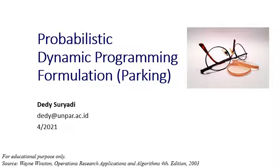Now let us see the very last example for probabilistic dynamic programming. Up to this point, all examples we have seen so far talk about problems that happen all the way until the very end of the stage — like for 30 days, for T years — and everything happens until the very end. In this example, you will see problems where we may stop before we reach the very last stage. This is one of my favorite examples because sometimes when I try to park my car, I remember this example.